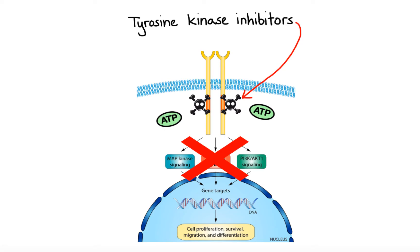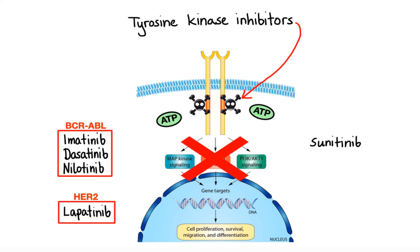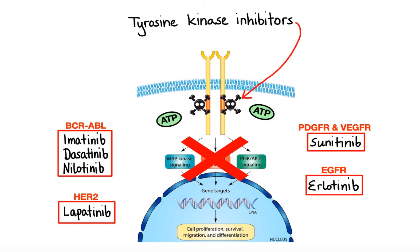Different types of tyrosine kinase receptors have been identified as targets for tyrosine kinase inhibitors. This led to development of agents such as imatinib, dasatinib, and nilotinib that selectively inhibit BCR-ABL receptor, which drives development of chronic myeloid leukemia; lapatinib that selectively inhibits HER2, which drives development of breast cancer; sunitinib that selectively inhibits platelet-derived and vascular endothelial growth factor receptors, which drive development of gastrointestinal tumors; and erlotinib that selectively inhibits epidermal growth factor receptor, which drives development of lung cancer.